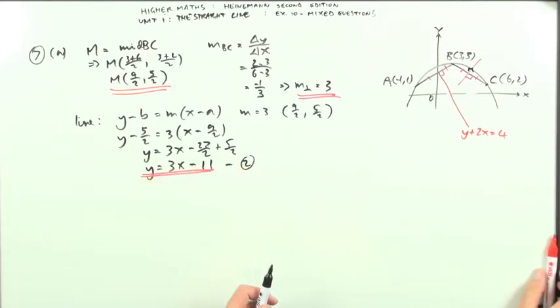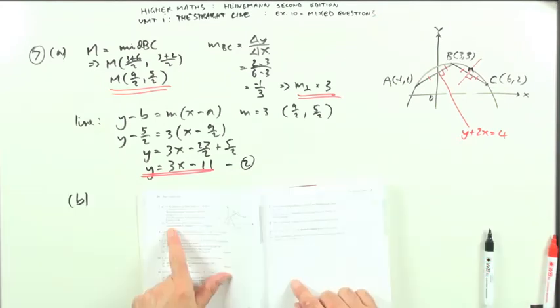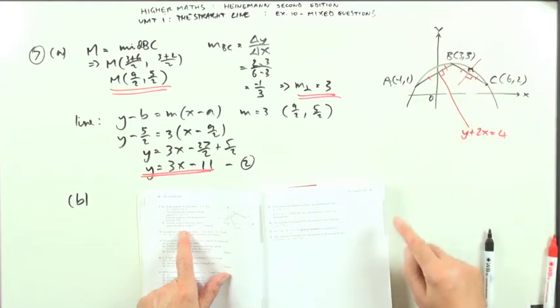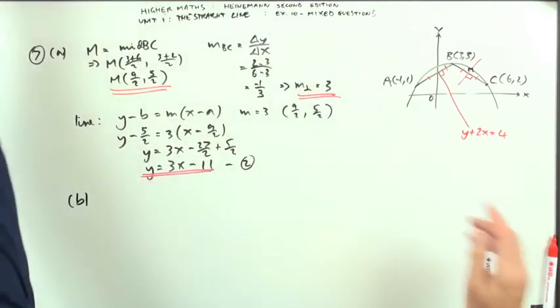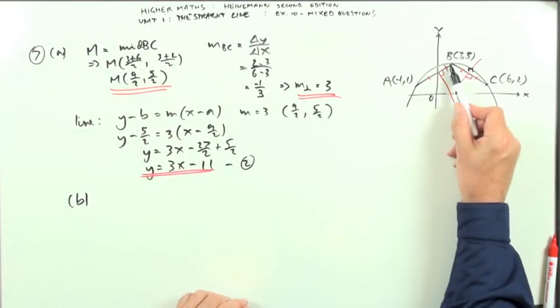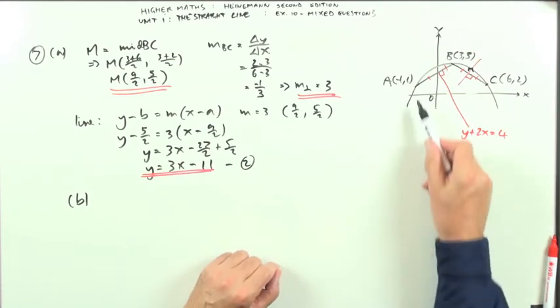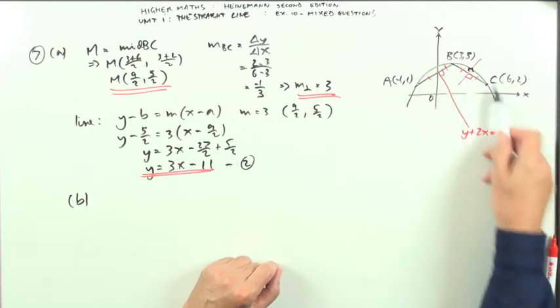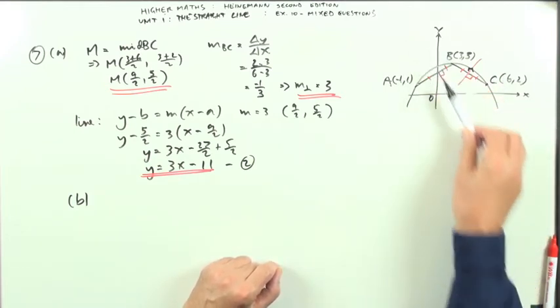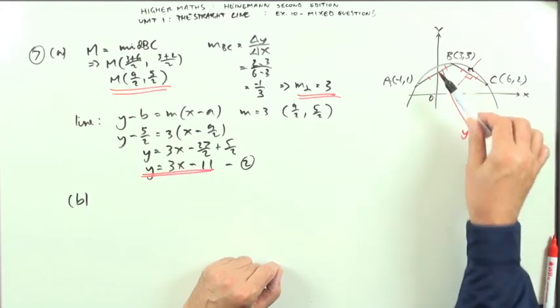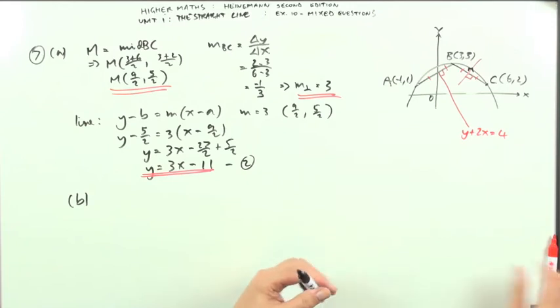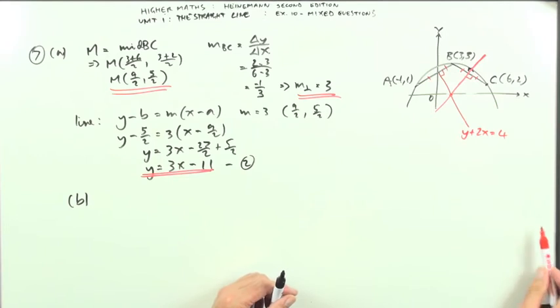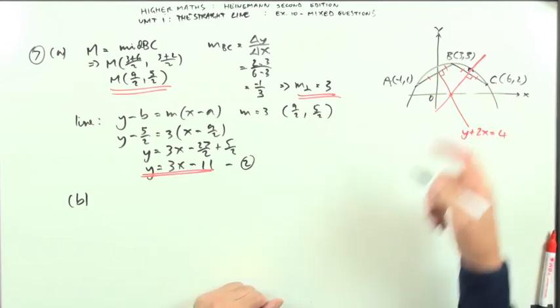Part B: Find the centre of the circle which passes through points A, B, and C. There's the circle drawn in. AB and BC are chords of the circle - lines that join two points on the circumference. Since a circle has symmetry, any diameter of a circle must bisect the chord at right angles, which means these perpendicular bisectors of the chords will intersect at the centre of the circle.